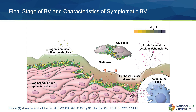The presence of a characteristic vaginal discharge, fishy vaginal odor, elevated vaginal pH, and clue cells visible on a wet mount comprise the four main Amsel criteria for making a diagnosis of BV in the clinic.